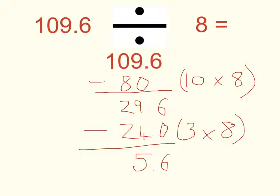To find the answer, I count how many lots of 8 I have used. 10 and 3 is 13 lots of 8. Don't forget your remainder, your 5.6.